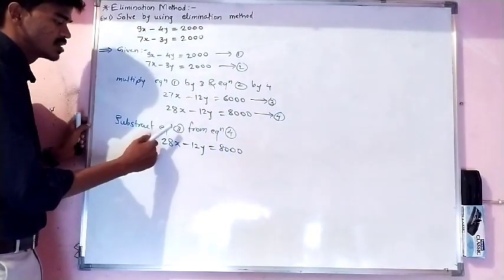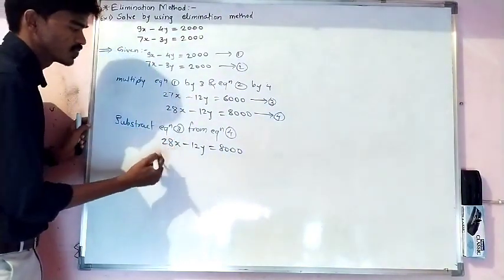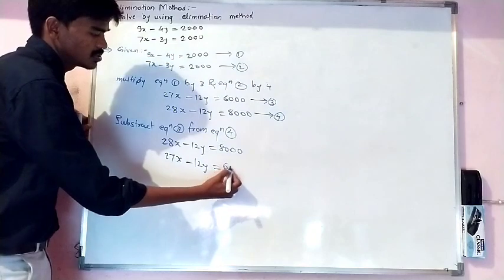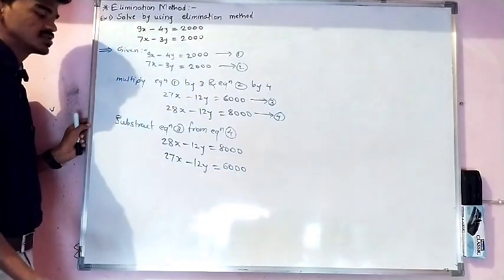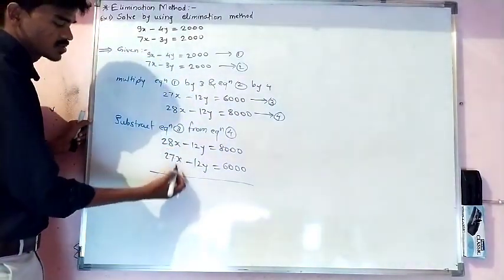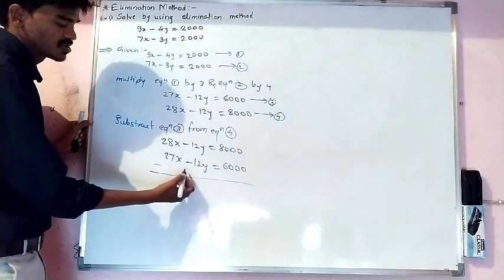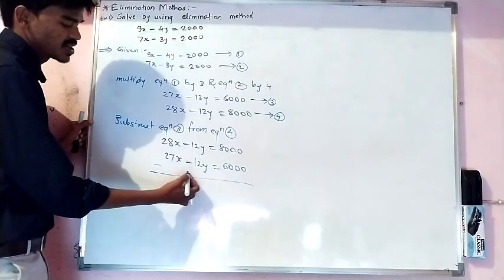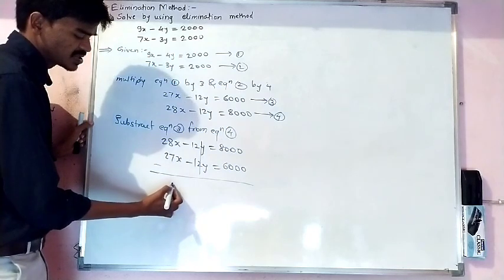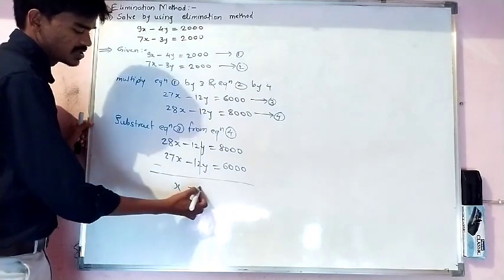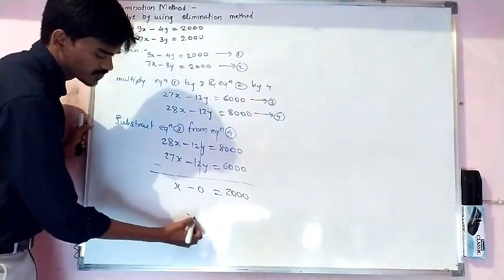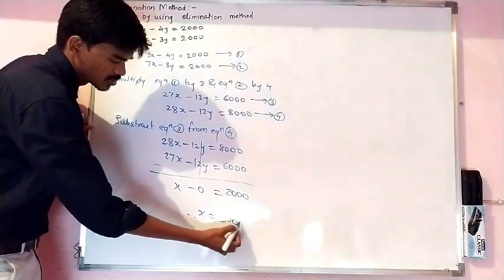We write equation 3 below: 27x minus 12y equals 6000. Subtracting, the signs become: minus minus gives plus. The y terms cancel out. 28x minus 27x gives x, and 8000 minus 6000 gives 2000. So x equals 2000.